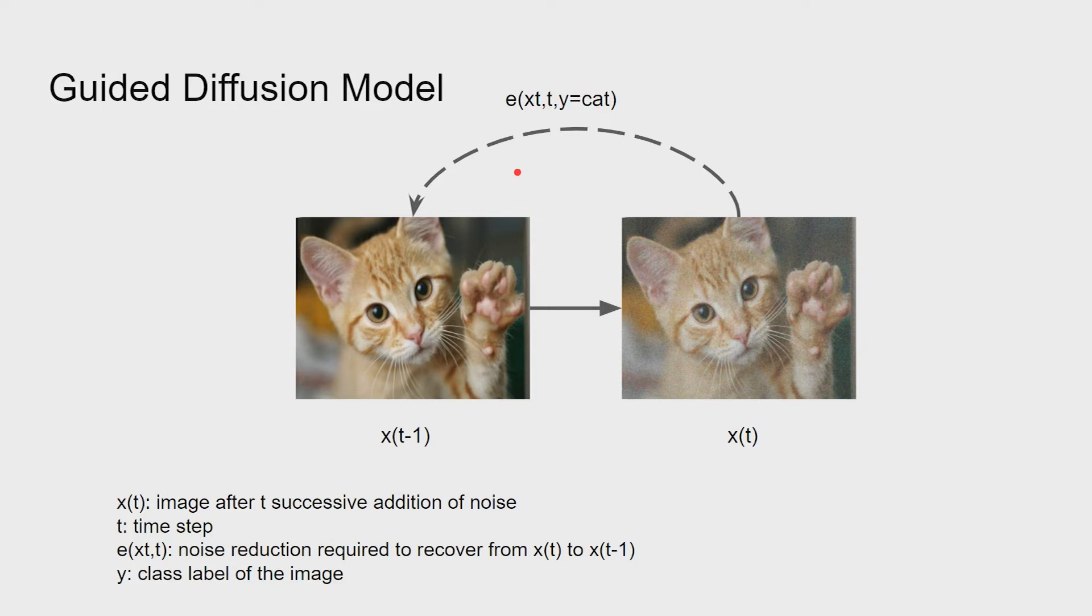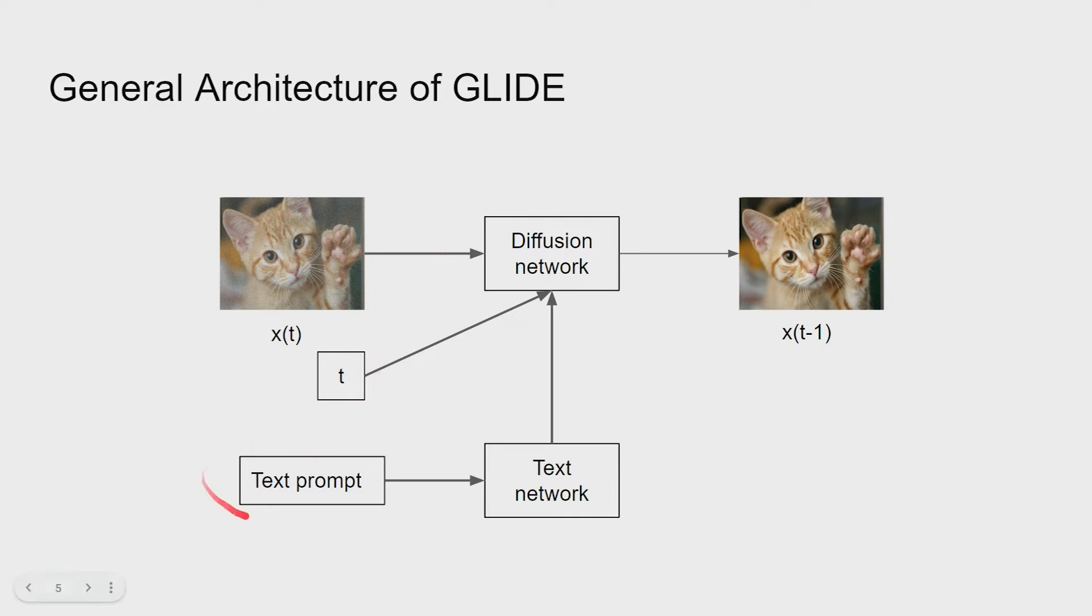This would be the general architecture of GLIDE. We have a text network that takes the text prompt and we have our diffusion network, which takes the noisy image and the text feature from the text network, and the result is a sharper image.